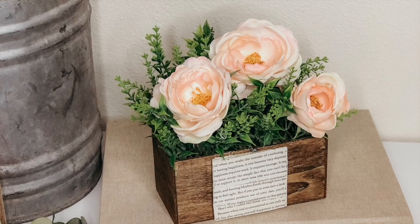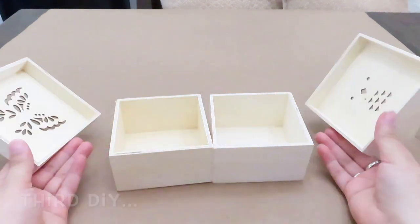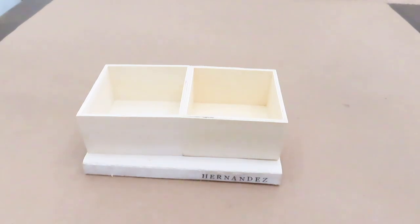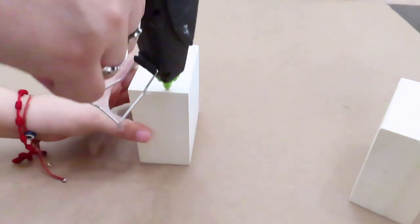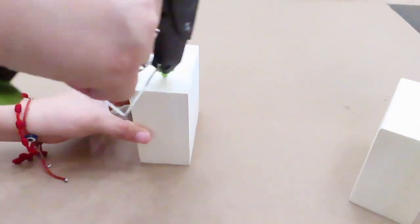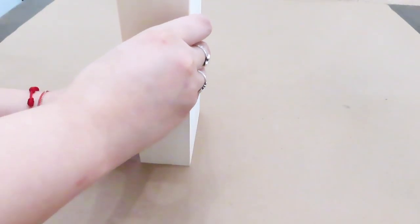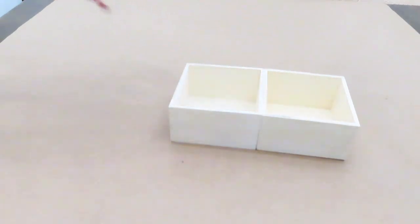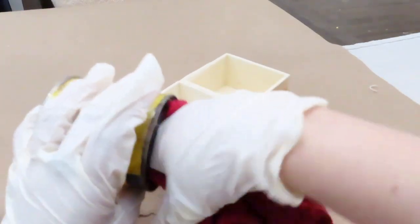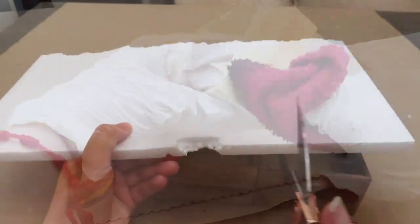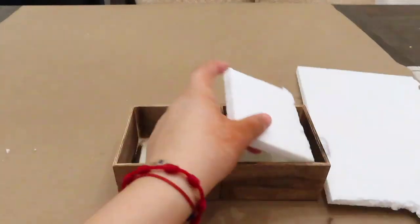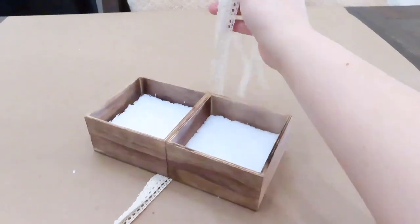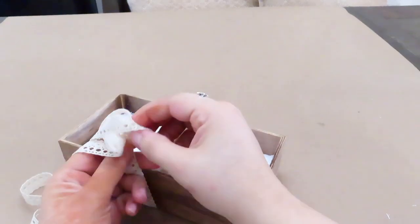For the last and final DIY, I'm going to be making this decor piece for the nursery. I started off by putting together the two wooden boxes with some hot glue. Next step, I'm just going to stain the wood. Now I'm going to be adding some lace ribbon from the Dollar Tree as well as some twine.